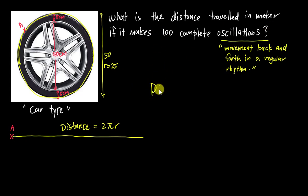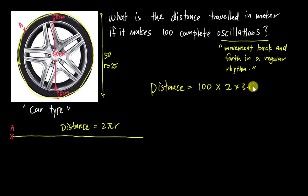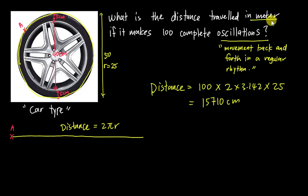To find the distance traveled, we do 100 multiplied by 2πr. Using π as 3.142, and r as 25, you just type everything into the calculator: 100 times 2 times 3.142 times 25. This gives 15,710 centimeters. But since the question asks for meters, we divide by 100 to get 157.10 meters.